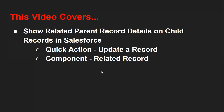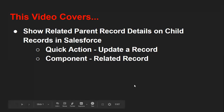Hello friends, I am Sanjay Gupta. I welcome you to Sanjay Gupta Tech School. In this video I am going to demonstrate how you can show related parent record details on a child record in Salesforce. For this we are going to use two things: first we need to create a quick action that will update our record, and then we will edit the lightning page and place a component called Related Record.